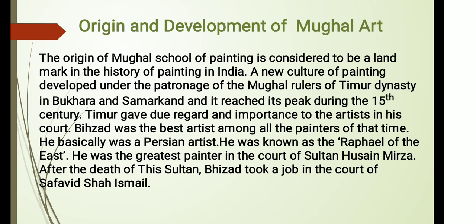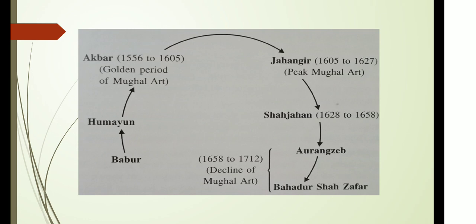Here I have one chart of Mughal emperors. The first one is Babur, then Humayun, then Akbar, then Jahangir, then Shah Jahan, then Aurangzeb, and the last one is Bahadur Shah Zafar. Now we will discuss them one by one.